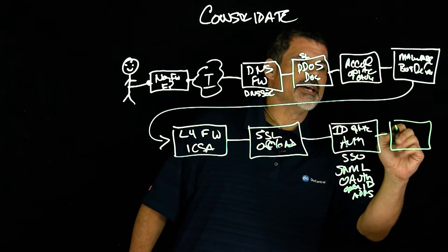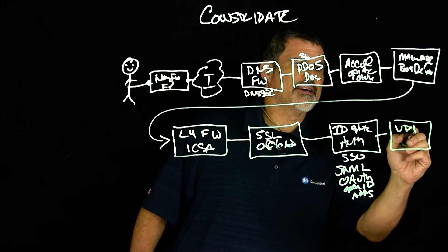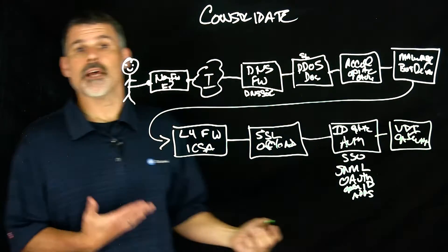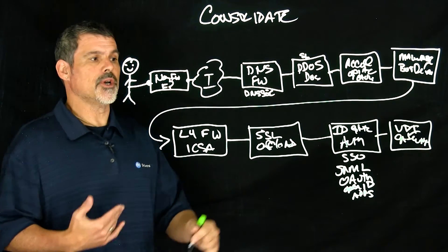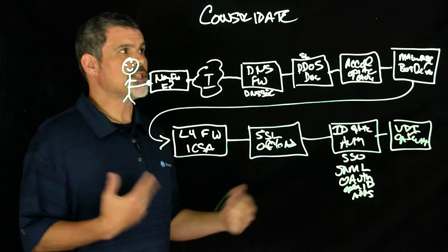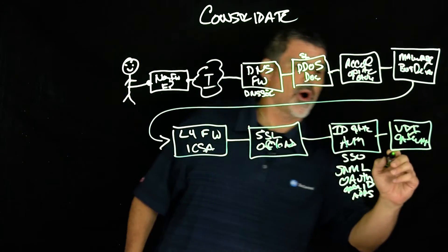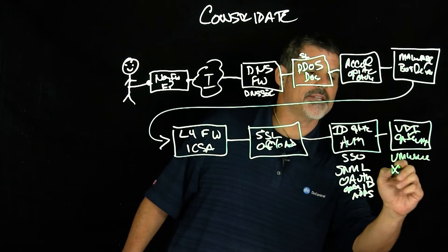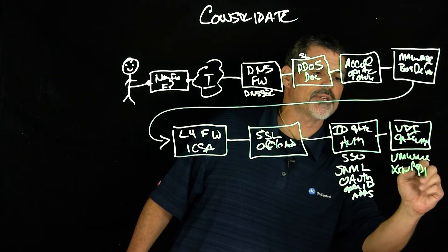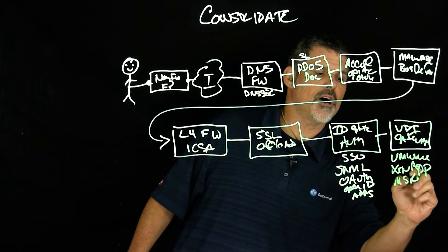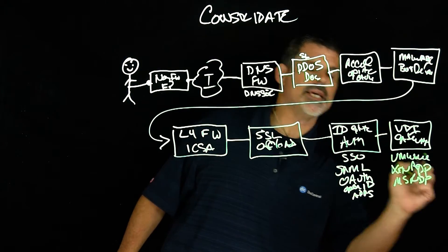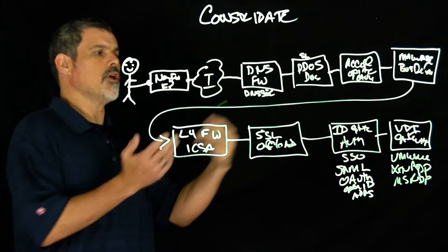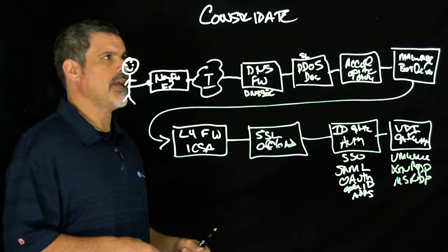Next is a VDI gateway. You can deliver your virtual desktops through the BIG-IP proxy. It supports things like VMware Horizon View clients, Citrix XenApp, and even Microsoft RDP. So you can deliver your virtual desktops through and protected by the proxy.